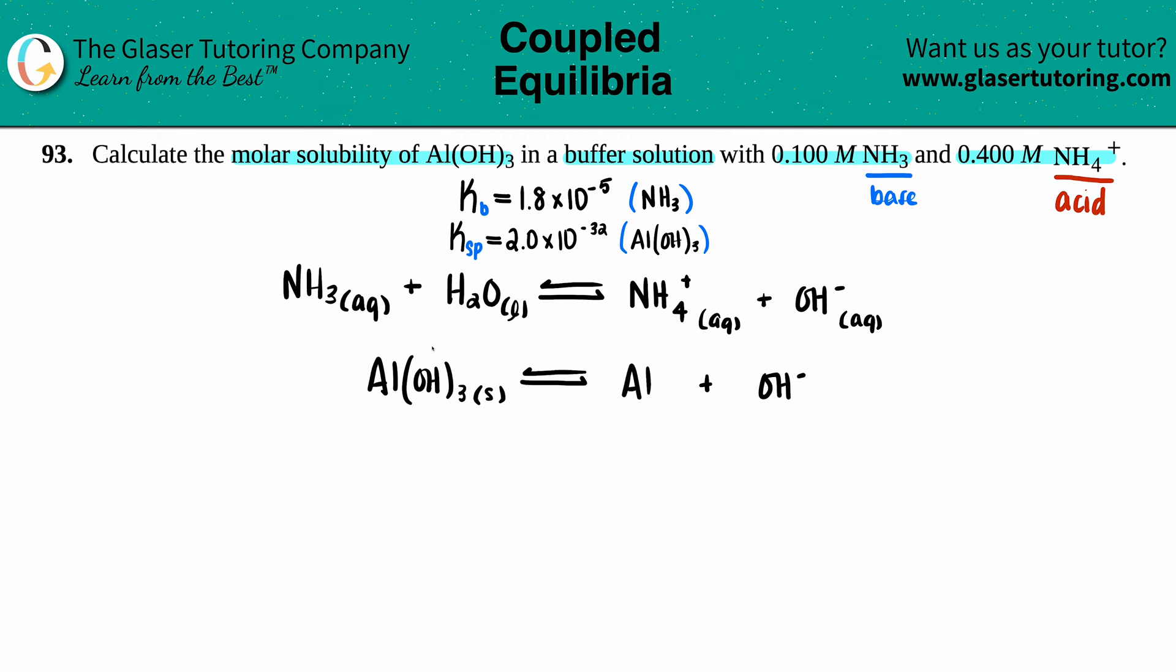You can use your subscripts to find out the charges of each. The 3 crisscrosses up telling me that the aluminum was a +3, and since they're both charges that means they're both aqueous. Make sure it's balanced—I see I have three hydroxides so I'm going to put a 3 in front of the OH here.